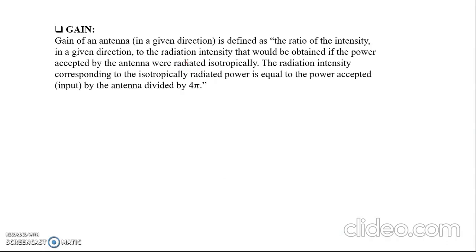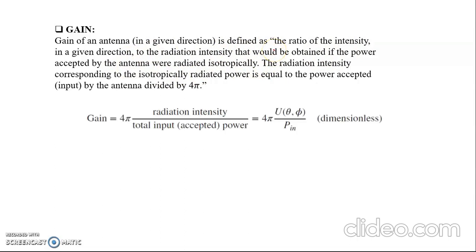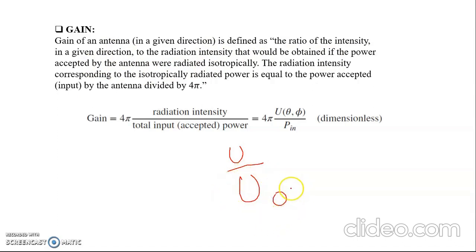The next parameter is antenna gain, which is related to antenna efficiency. Gain is defined as the ratio of the radiation intensity in a given direction to the radiation intensity that would be obtained if the power accepted by the antenna were radiated isotropically. Mathematically, G = U(θ,φ) / (P_in / 4π), where U₀ = P_in / 4π using input power. Gain is a dimensionless quantity.